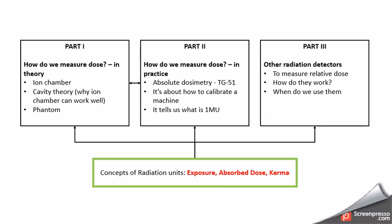The first question is how do we measure dose from a theoretical perspective? For example, I would like to discuss what is an ion chamber, what is the theory behind an ion chamber, and what is a phantom. Following the theory, I want to talk about the practicality of measuring radiation dose — for example, absolute dosimetry and how medical physics calibrates a machine.